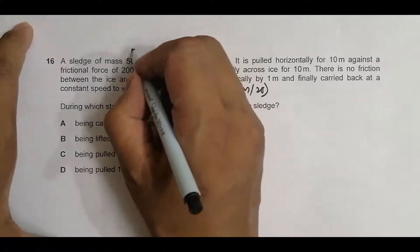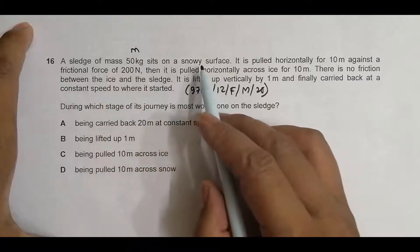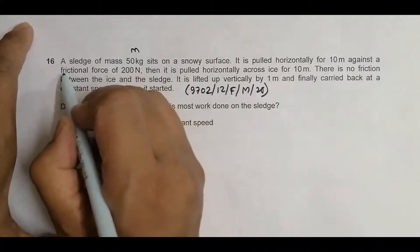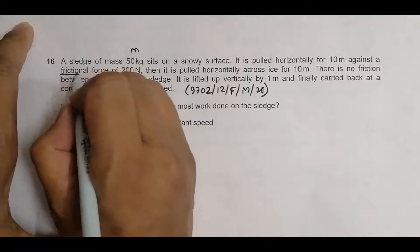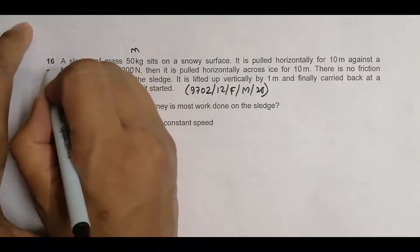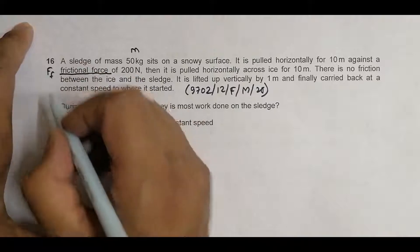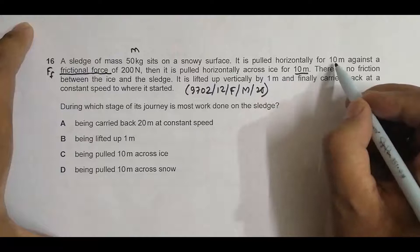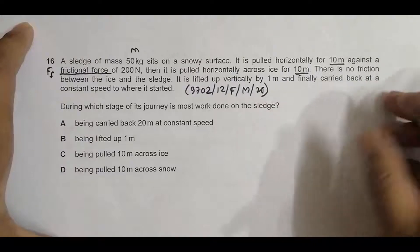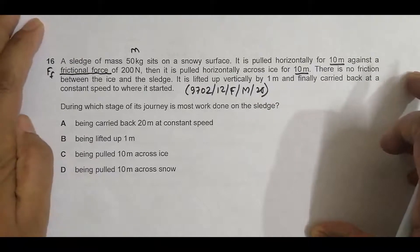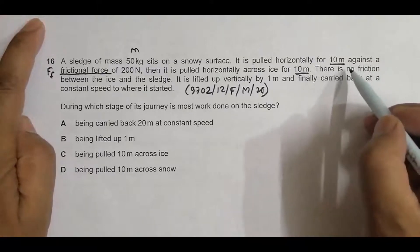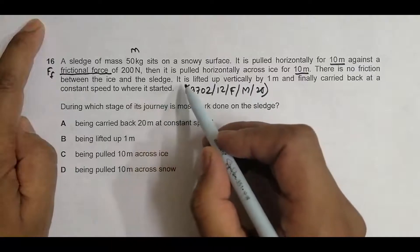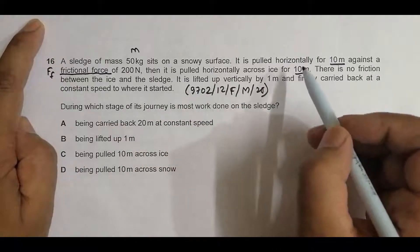It says that a sledge of mass 50 kg sits on a snowy surface. It is pulled horizontally for 10 meters against a frictional force of 20 Newtons. Then it is pulled horizontally across ice for 10 meters — there is no friction between the ice and the sledge. Then it is lifted up vertically by one meter.